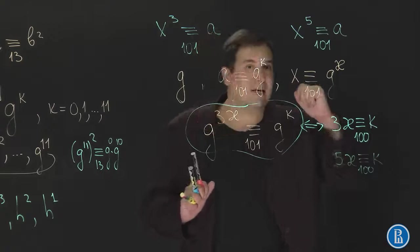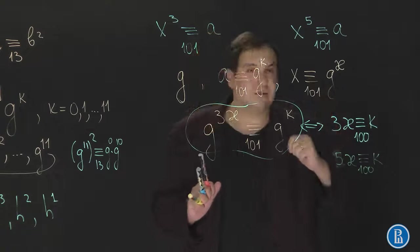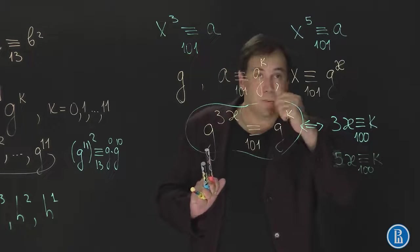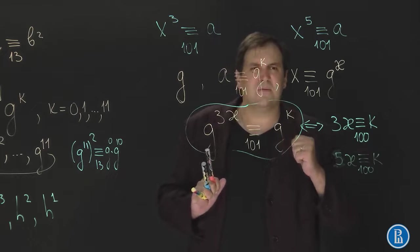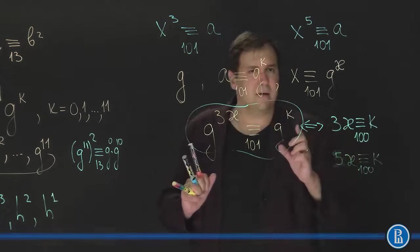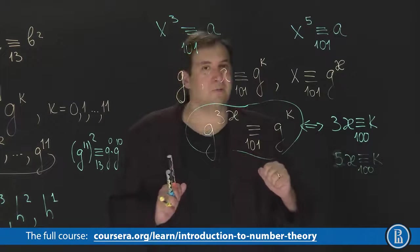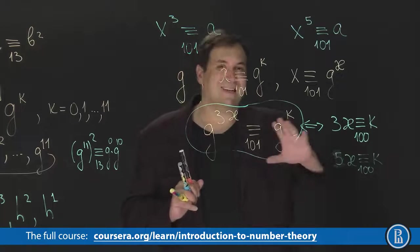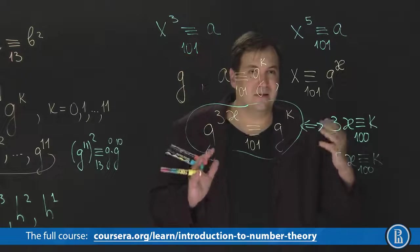And in this case there are only 20 such k that kappa exists. So we know that this equation here is solvable for only 20 residues, 20 remainders modulo 101. And of course remainder 0 is not considered here. Why? Because 0 is not the power of a primitive root. 0 stands aside. Of course if a is equal to 0 then x exists.